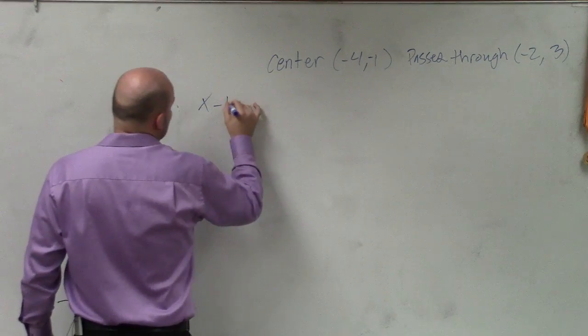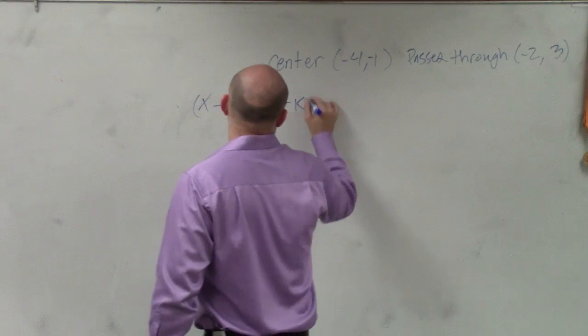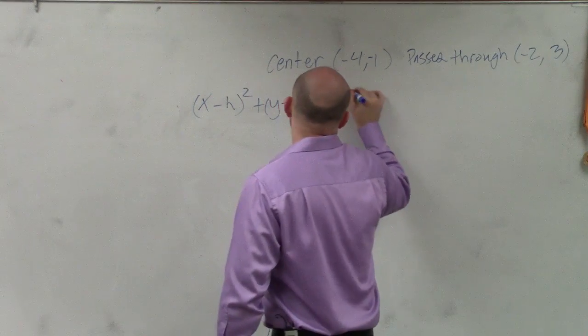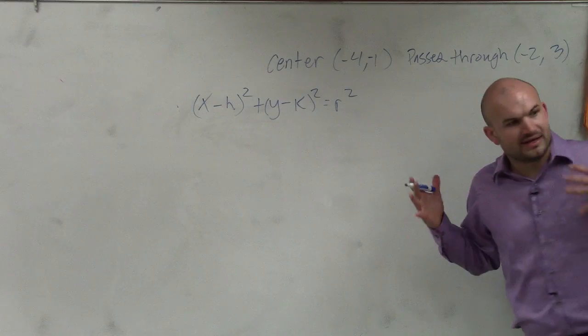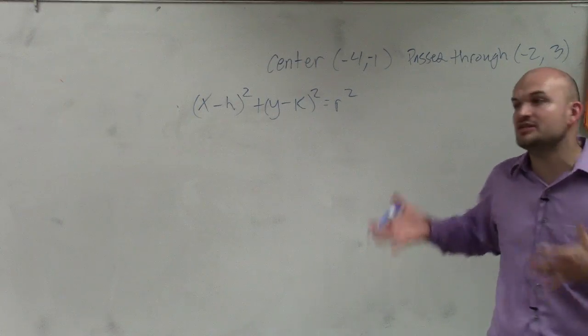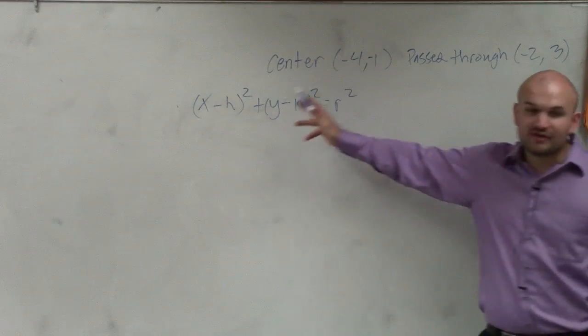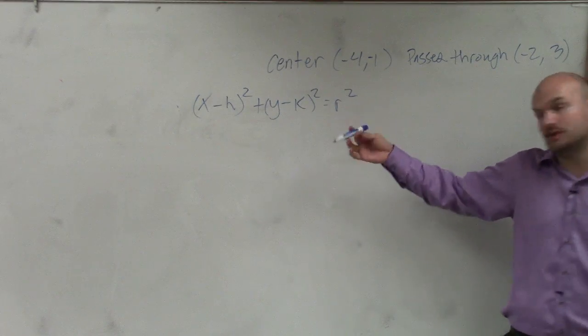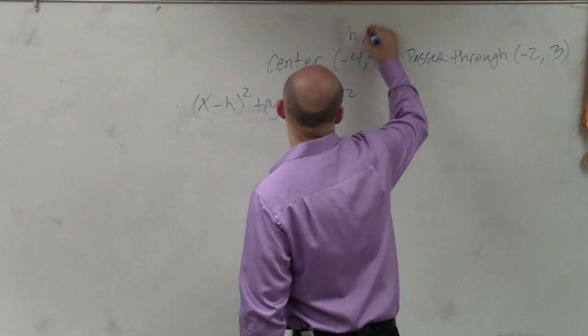So it's x minus h squared plus y minus k squared equals r squared. So now we know what the equation has to look like. Now let's take the piece of information and see what is it we have. They give us the center, which we know is in the form of h comma k.